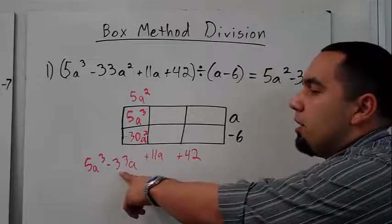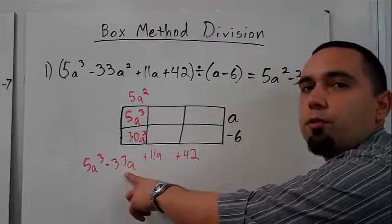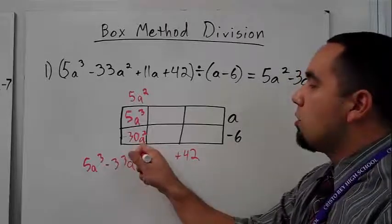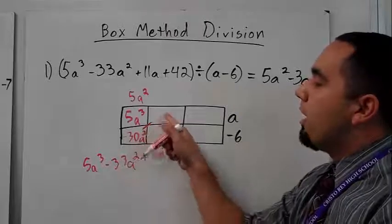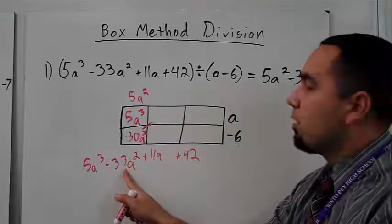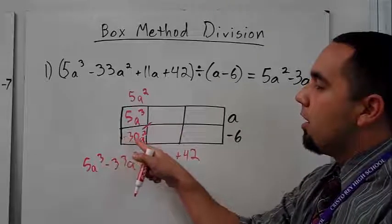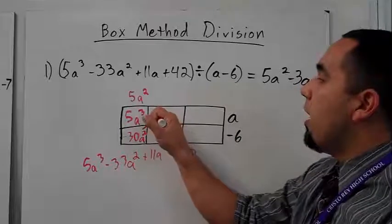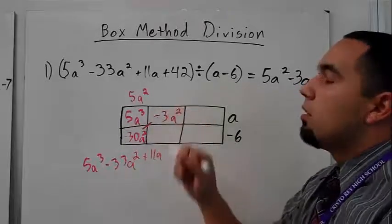And the way this helps is that I should be looking at my middle term here. Well, this is negative 33a squared, but I got a negative 30a squared. Sorry, this should be squared. But I know that these two boxes add together to make this term. So all I've got to do is figure out what do I have to add to negative 30a squared to get negative 33a squared. Well, I have to add another negative 3a squared.